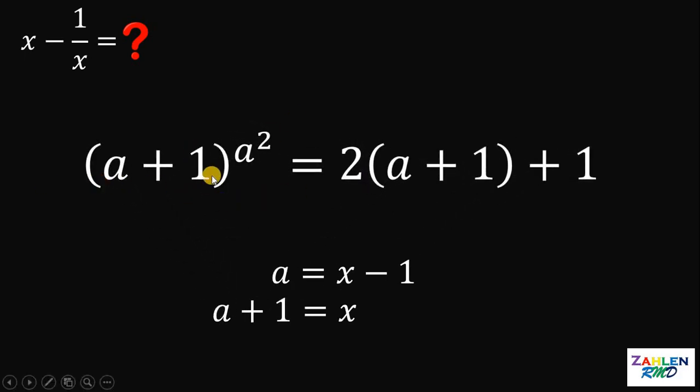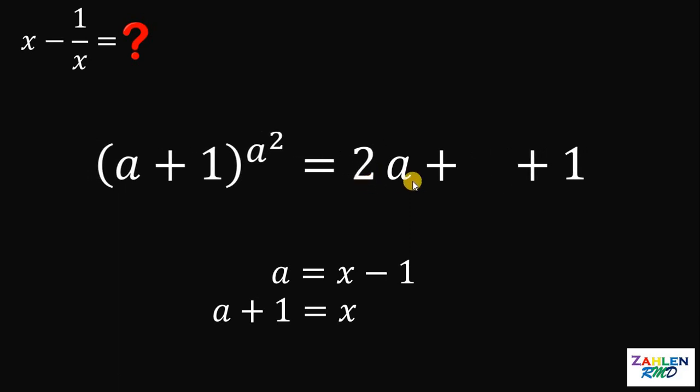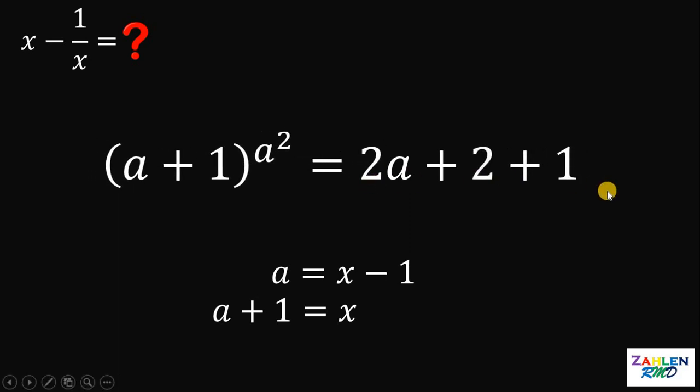Now, we have a plus 1 raised to a squared equals 2 times a plus 1 plus 1. Now, let's distribute this 2. So, we have 2a plus 2 plus 1.